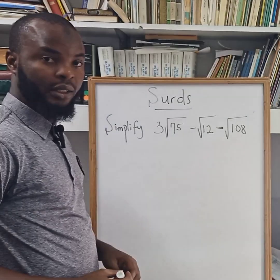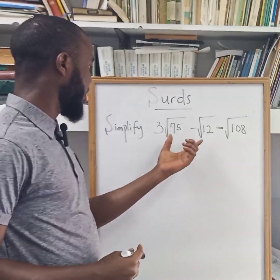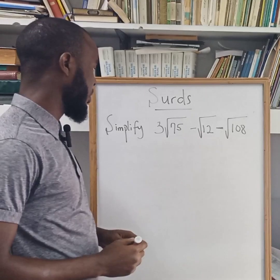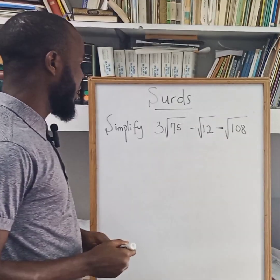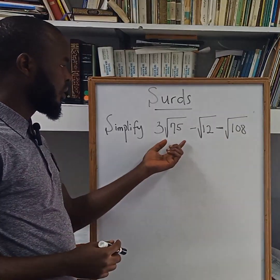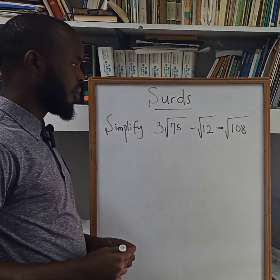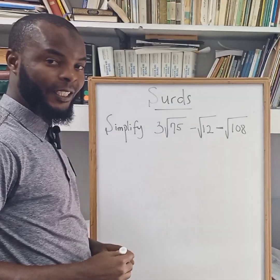Hi guys, welcome to a Jardimath class. Today we want to solve this third question. Simplifying this, we have 3 root 75 minus root 12 minus root 108.